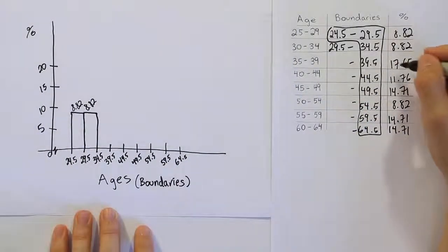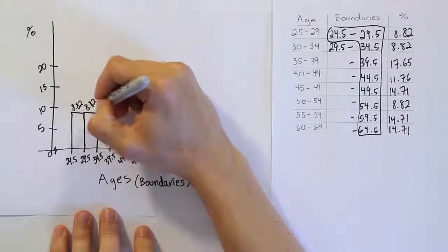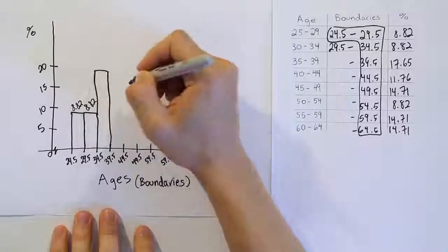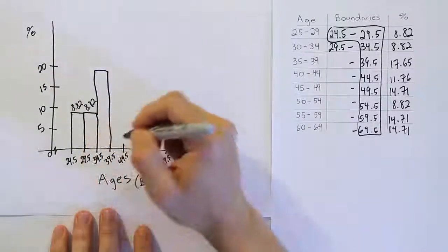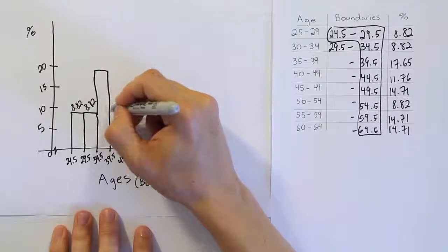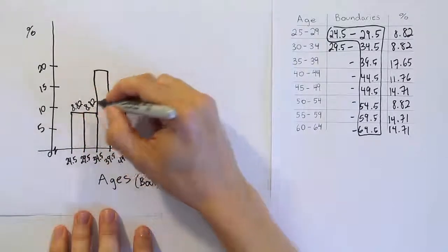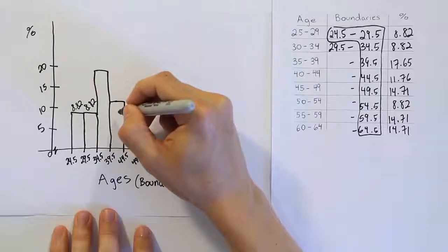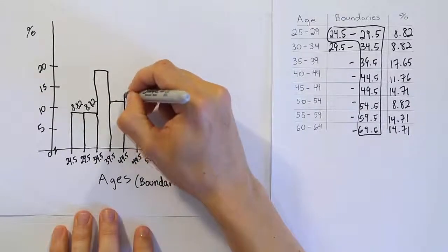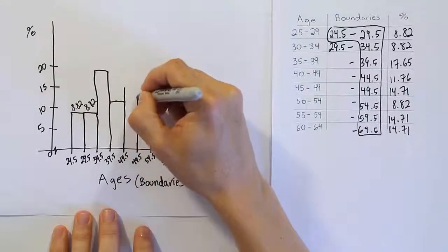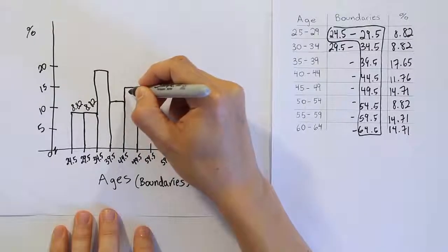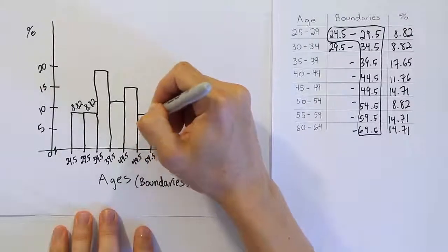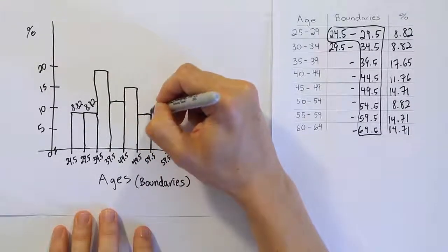The next one is about 18 or so. So again, I would come up to somewhere near 18, and there it is. And then so on and so forth, you just finish the table. I'm just going to do that quickly. Say this is about 11, so a little higher than 10. And then about 15, so maybe about here. And then again, 8.82, so about there.